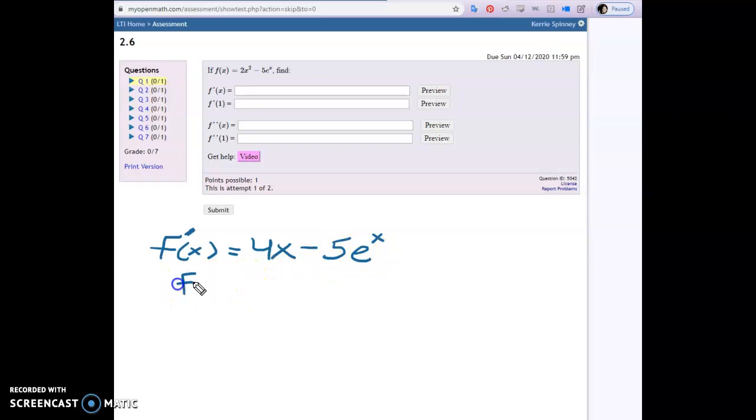And then we want to know what f prime of 1 is. So what happens if we put 1 into this function? It looks like we get 4 times 1 minus 5 e to the first power, so just 5e. I'm assuming they want exact answers. Otherwise, we can throw that in our calculator.